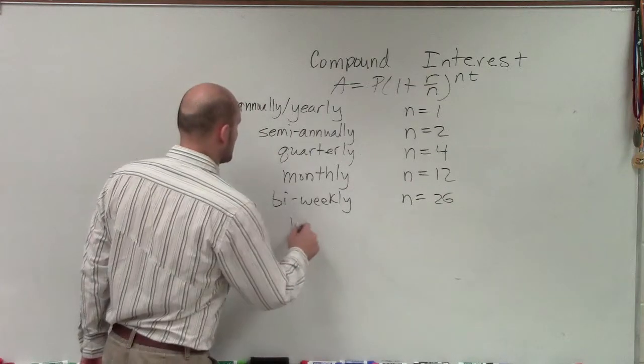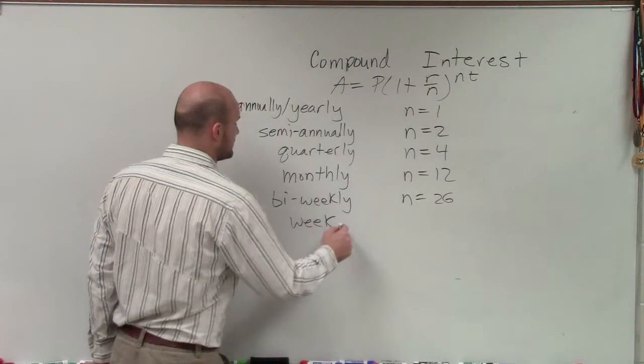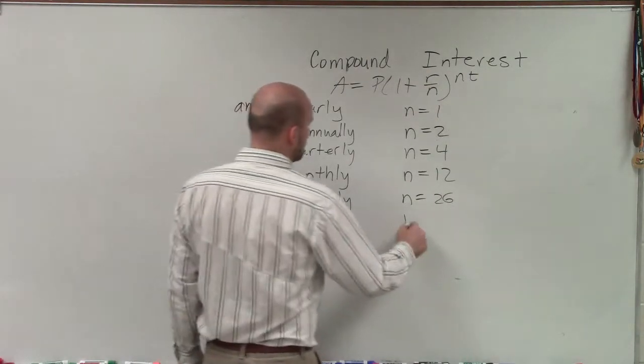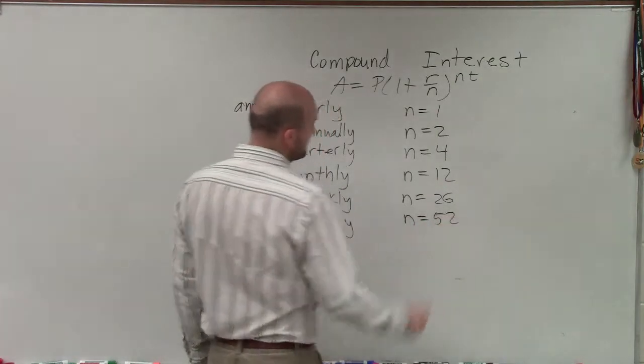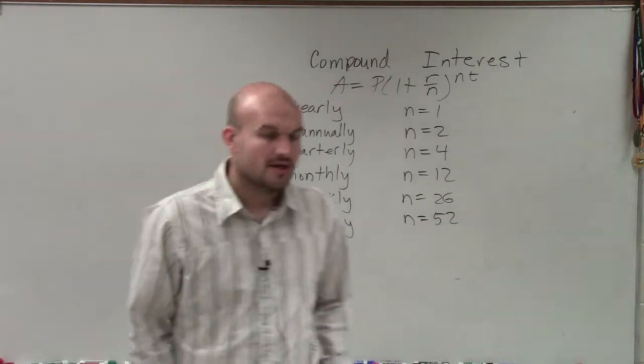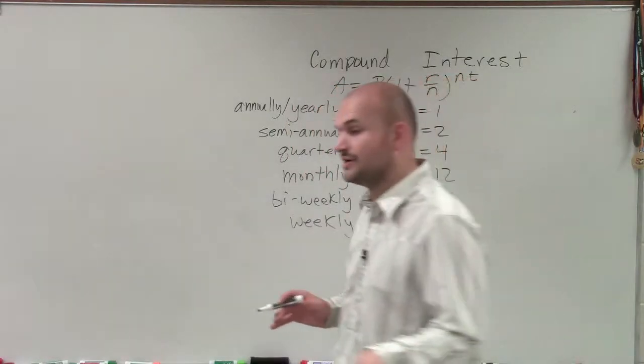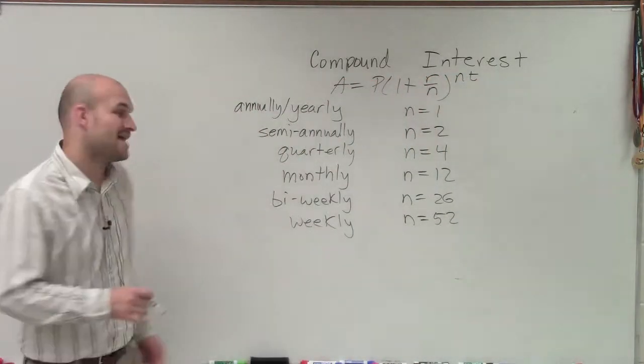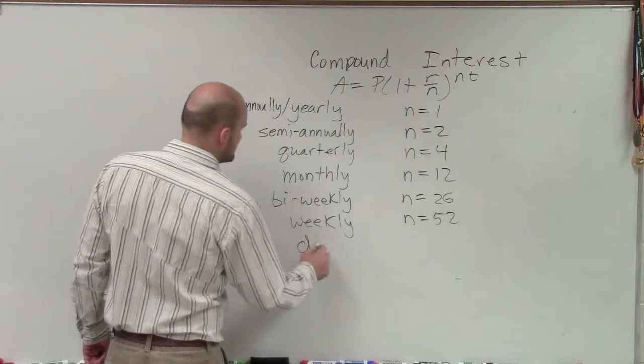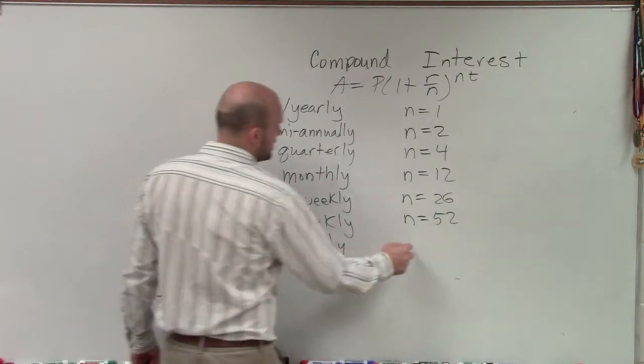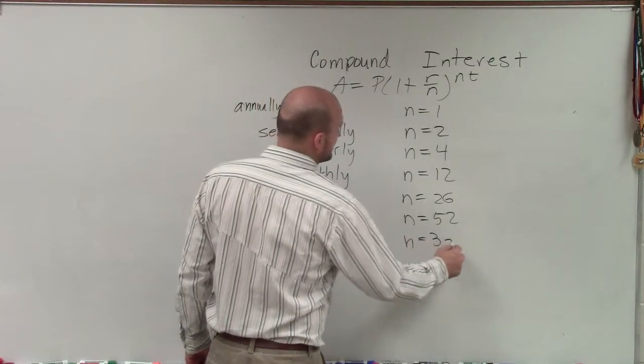Then of course we could say, well, I can charge your interest weekly. So therefore N would equal 52. Then if you go after, well, sometimes it's not even every week of the year, but sometimes even every day of the year. So we call that daily. And when we're dealing with daily, we're going to deal with 365.